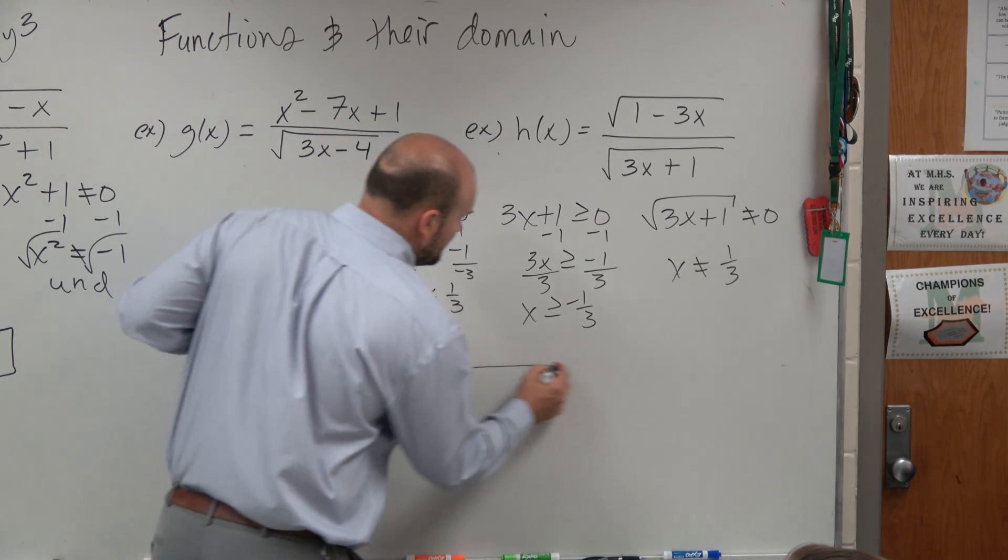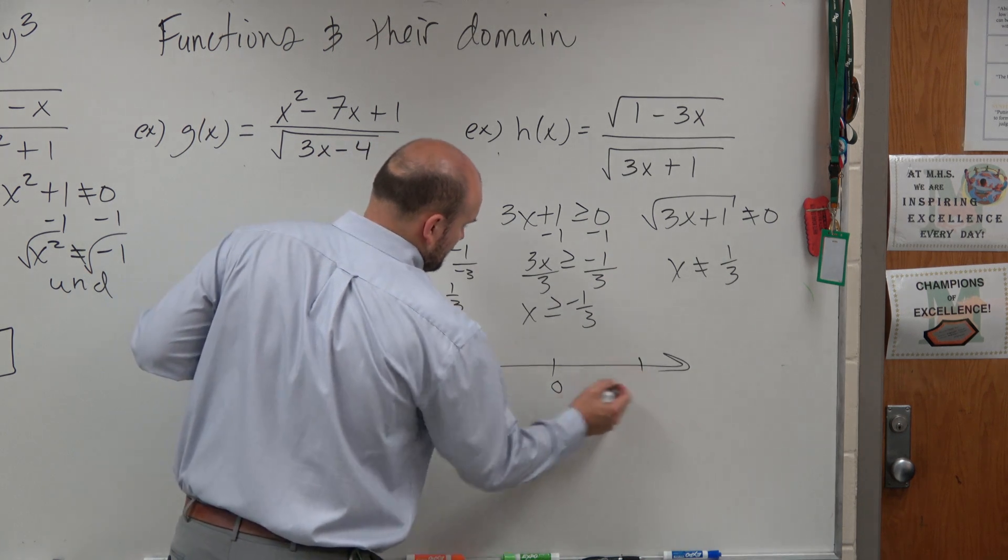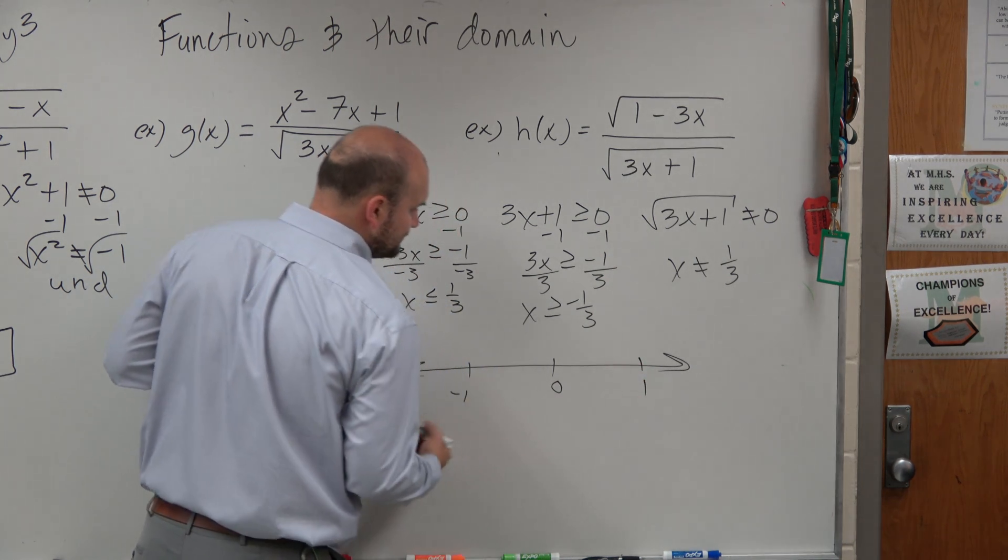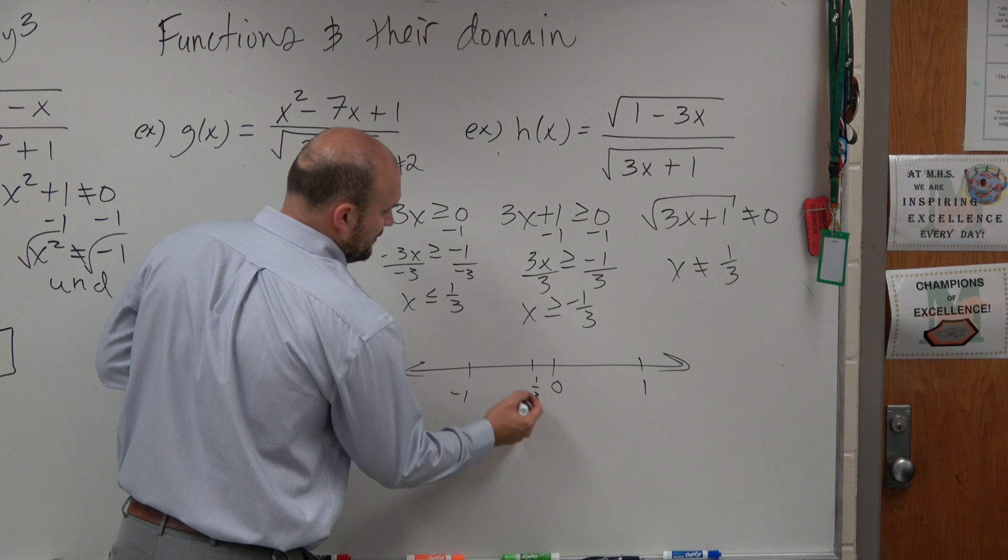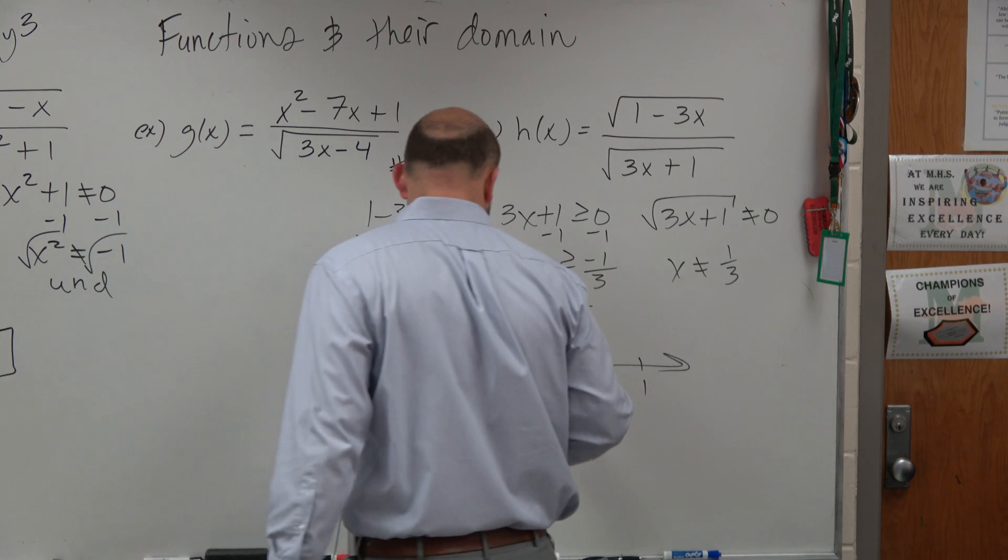So let's go back to the number line. Let's do 0. Let's do 1. Negative 1, I'm sorry. Okay. And 1. 1 third. 2 thirds. Okay. Either way. Whatever.